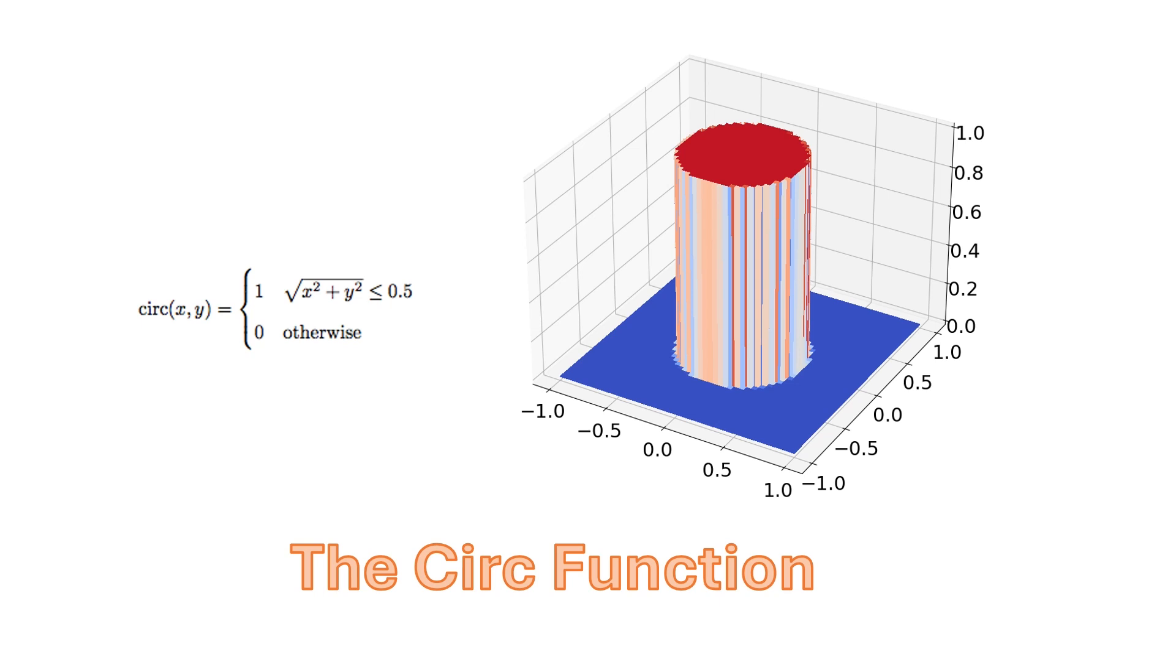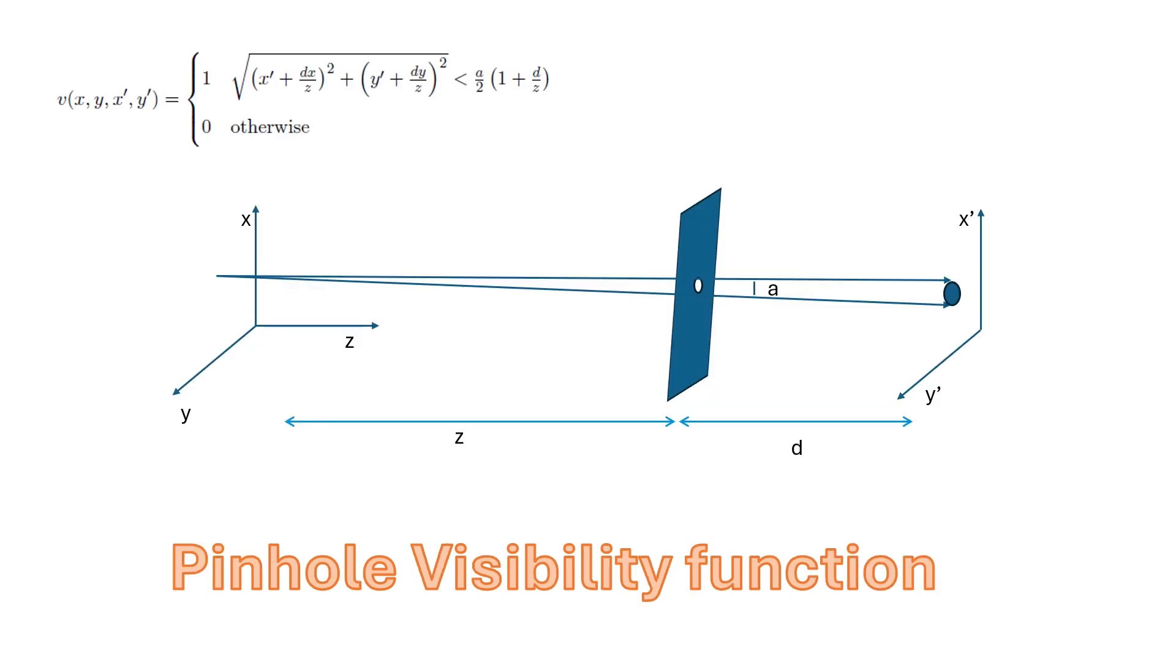Now we can describe visibility for points in space through this pinhole. We want to consider the visibility of point (X,Y) in the object plane with point (X',Y') in the measurement plane. The visibility is 1 if the ray projected from (X,Y) to (X',Y') goes through the pinhole, which means that its intersection point in the measurement plane lies within the radius of the projected pinhole.